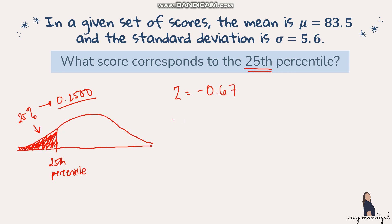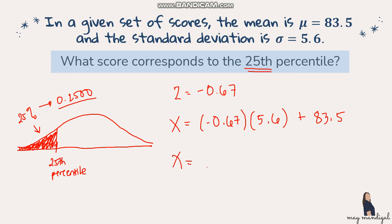Now we convert the z-score into the raw score using the formula: x = z times standard deviation plus mean. So x = (-0.67)(5.6) + 83.5. Computing this gives us 79.75. This is the rough estimate of the score that corresponds to the 25th percentile.